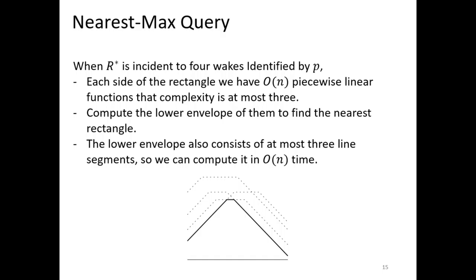Next is finding the nearest-max rectangle. We first consider when it is incident to the wake. To find the nearest-max rectangle, we compute the lower envelope of precomputed piecewise linear functions for maximum distance query between a point and rectangle. Every piecewise linear function consists of at most three linear pieces whose slopes are minus one, zero, and one in order. Therefore, the lower envelope also consists of at most three linear pieces, and we compute the lower envelope in linear time.